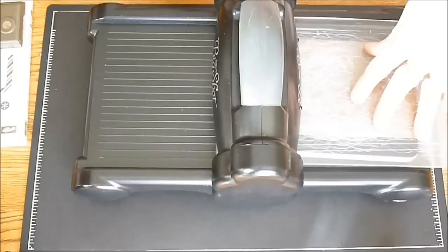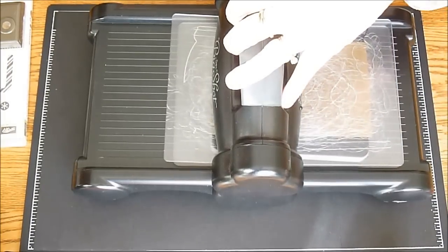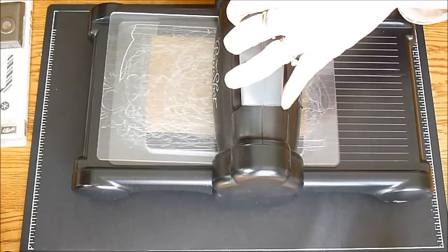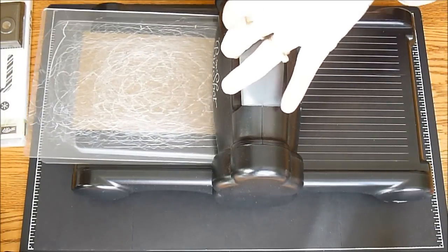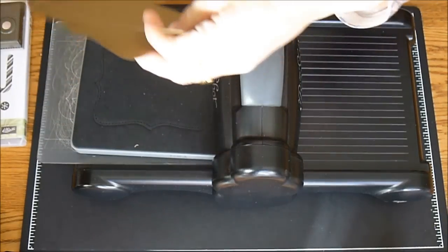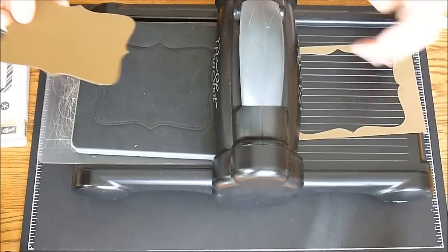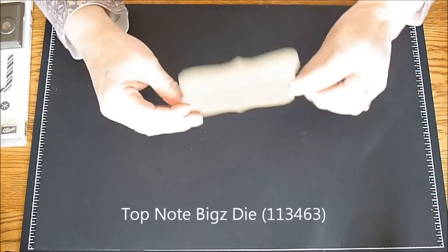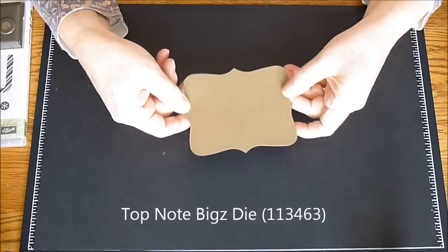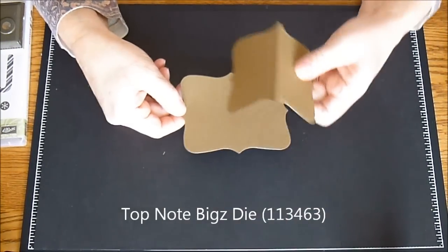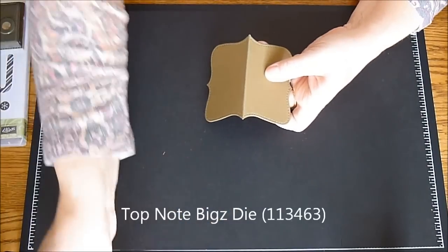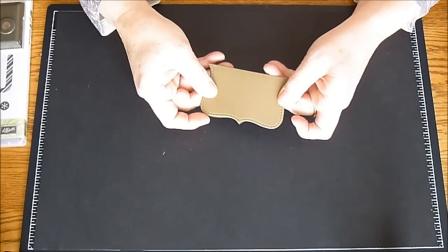First we're going to cut out our little topper with the big accent or excuse me top note die. And I love this die, it's probably one of the best selling dies that Stampin' Up! has because it makes these cute little stitched looks. And you're going to fold that in half to create your reindeer face.